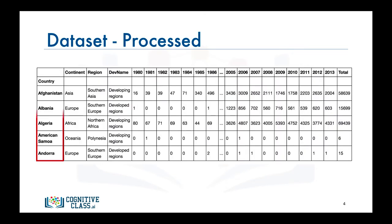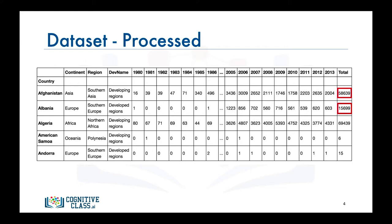Now let's process the data frame so that the country name becomes the index of each row. This should make retrieving rows pertaining to specific countries a lot easier. Also, let's add an extra column which represents the cumulative sum of annual immigration from each country from 1980 to 2013. So for Afghanistan, it is 58,639 total, and for Albania it is 15,699, and so on. Let's name our data frame DF_Canada.